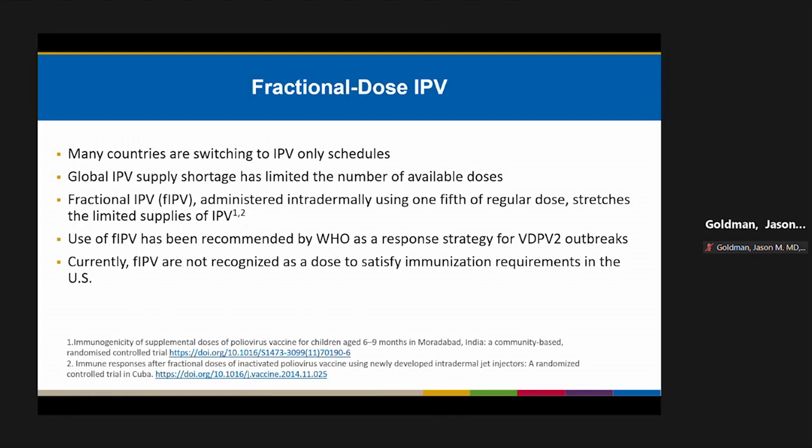Another innovation is fractional dose IPV. Many countries are switching to IPV-only schedules, but a global IPV shortage has limited available doses. Fractional IPV administered intradermally using one-fifth of the regular dose stretches limited supplies. WHO has recommended fractional dosing as a response strategy for VDPV outbreaks. Currently, fractional doses are not recognized as satisfying immunization requirements in the United States.